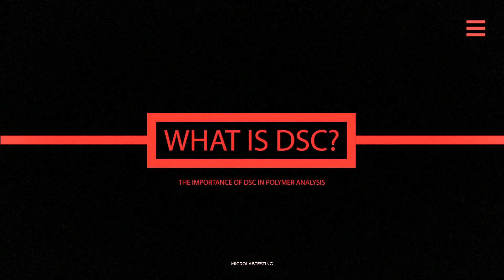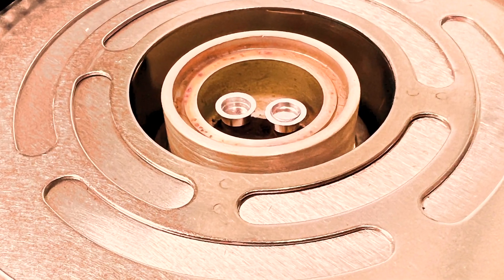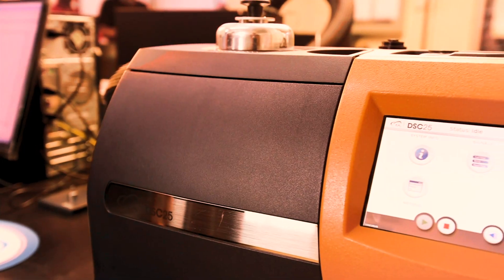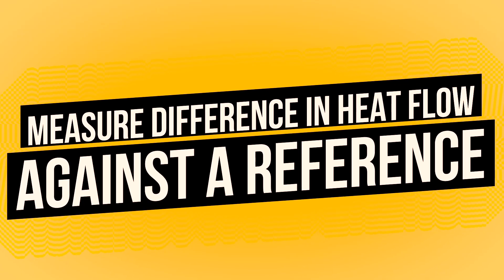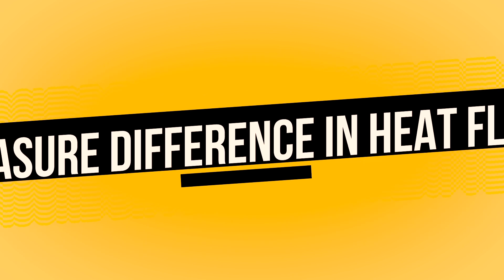Let's start with what DSC is and see why this is so important. Differential scanning calorimetry is a thermal analysis technique used to study the thermal behavior of materials. It involves measuring the differences in heat flow between the sample and the reference material as they are taken through controlled temperature changes.